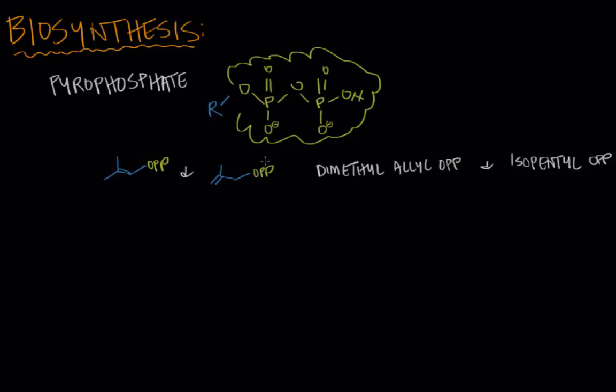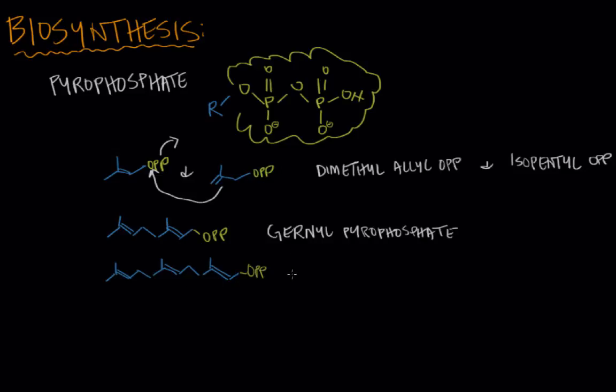But what happens is the electrons of one pi bond act like a nucleophile, and they attack this carbon, allowing the pyrophosphate to leave, and that results in a 10-carbon molecule called geranyl pyrophosphate. And so that's geranyl pyrophosphate. And then that process might happen again, leading to a 15-carbon farnesyl pyrophosphate. And forgive me if I'm butchering that pronunciation, but I'll draw it in. And that's farnesyl pyrophosphate.